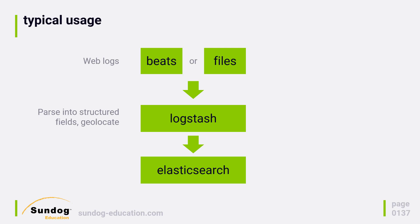Either way works. The more modern approach is to use FileBeat, which is part of the Beats framework, to talk to Logstash as an intermediate layer. Without FileBeat, that gets back to what we used to call the ELK stack — Elasticsearch, Logstash, and Kibana — where the L stands for Logstash. These days we use what's called the Elastic stack instead, because it's really more about using the Beats framework than Logstash alone.